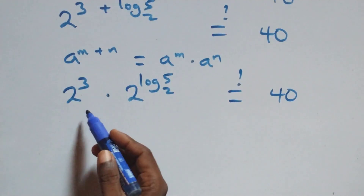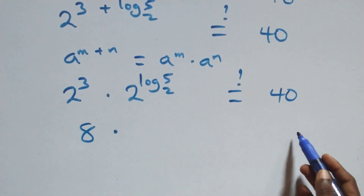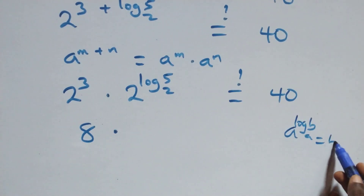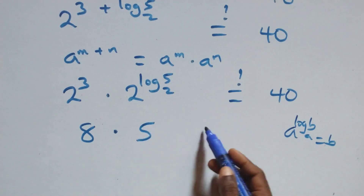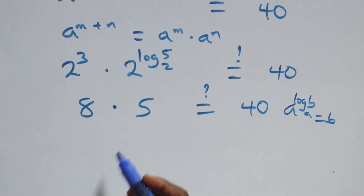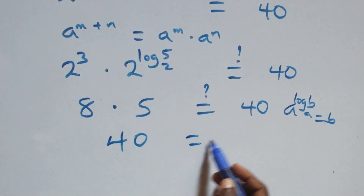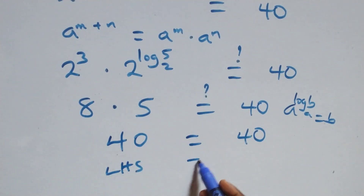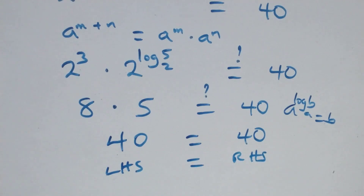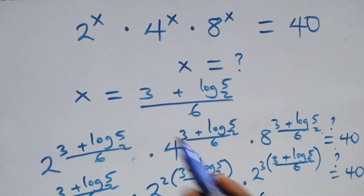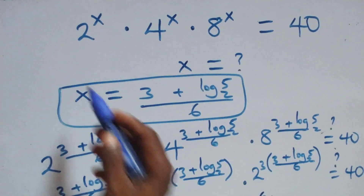Now, 2 raised to power 3 is the same as 8. Then, using the rule that a raised to power log b to base a equals b, we get 2 raised to power log 5 base 2 equals 5. So we have 8 times 5, which equals 40. The left-hand side equals the right-hand side. Therefore, x equals (3 plus log 5 base 2) all over 6 is the correct solution.